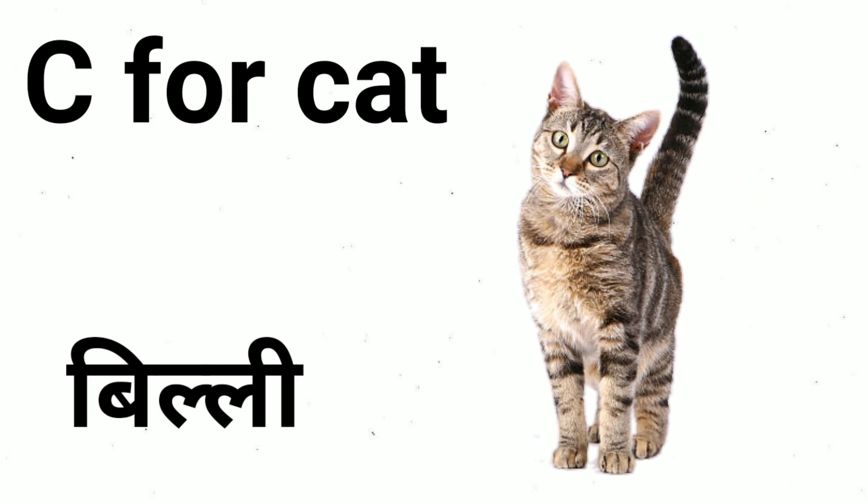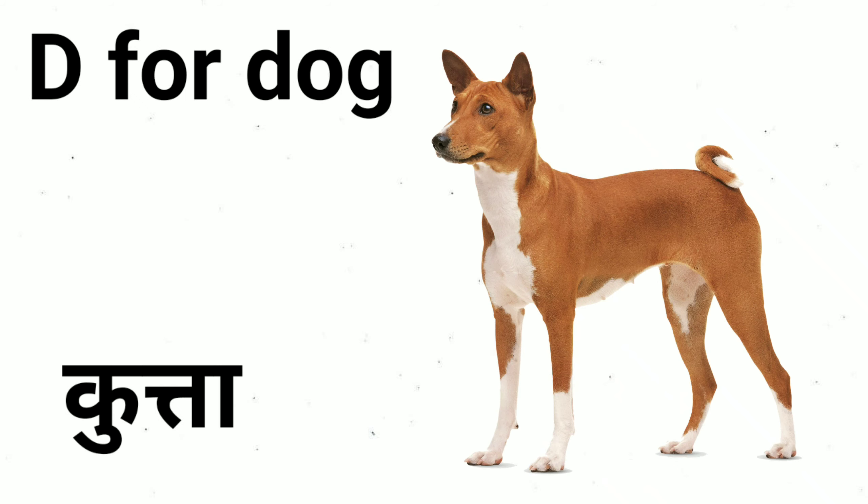C for cat. Cat means billy. D for dog. Dog means kutta.